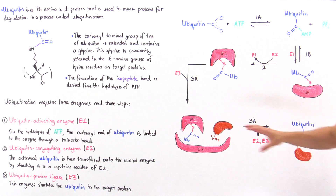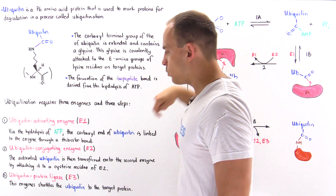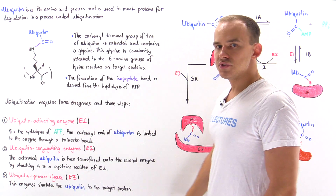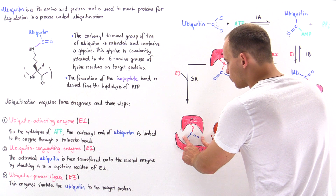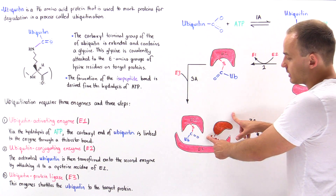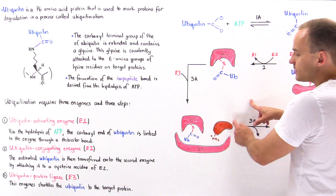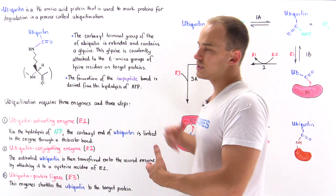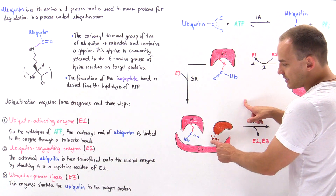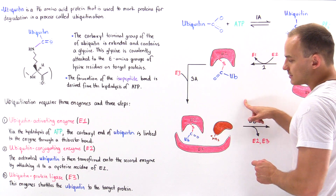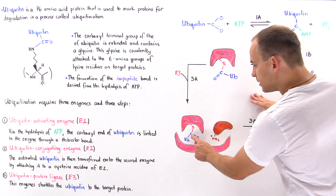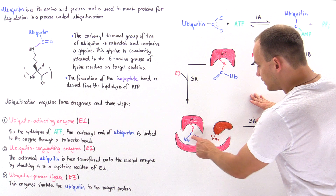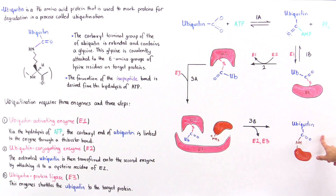In the final step, enzyme E3 — known as ubiquitin protein ligase — enters the picture. What it does is transfer the ubiquitin group onto the target protein. Suppose this is the target protein we want to break down, and this is the lysine residue we are about to add the ubiquitin molecule to. Ultimately, this carbon forms a bond with this nitrogen, and we form the final product molecule.